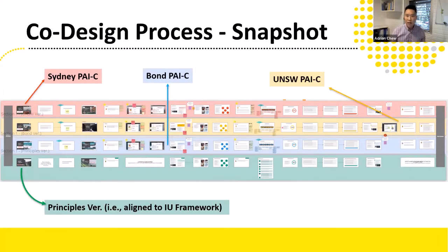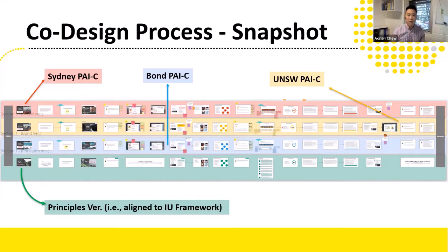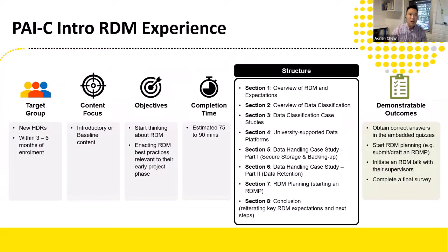This slide gives a high-level overview of how PISC was developed. Over the last couple of months, we have jointly developed an RDM principles version — that's the green color track. From that principles version, we created contextualized versions — like spin-offs — for each university. Through this co-design process, we found that while we are three very different universities, there is in fact a common RDM ground. In a way, we can be same-same but yet different.